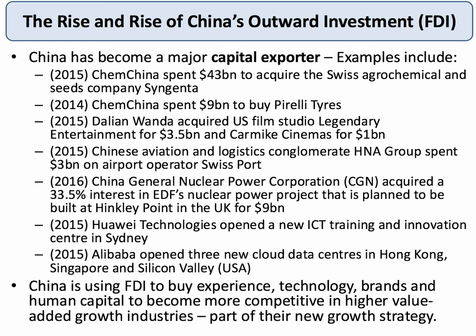Lots of Chinese companies are now investing more overseas. Here are some examples of recent outward FDI from China, either in physical manufacturing capacity, infrastructure, and projects, or in mergers and takeovers. ChemChina has spent over $40 billion to acquire the Swiss agrochemical and seeds company Syngenta. Just two years ago, they spent nearly $10 billion to buy the Italian tyre company Pirelli. Dalian Wanda, a Chinese media firm, has bought US film studio Legendary Entertainment — the company that made Jurassic Park — and also a chain of cinemas in the US for $1 billion. China General Nuclear Power Corporation now has a one-third interest in the proposed nuclear power project at Hinkley Point in the UK. Huawei Technologies is opening an ICT training and innovation centre in Sydney that will train up to 2,000 engineers every year.